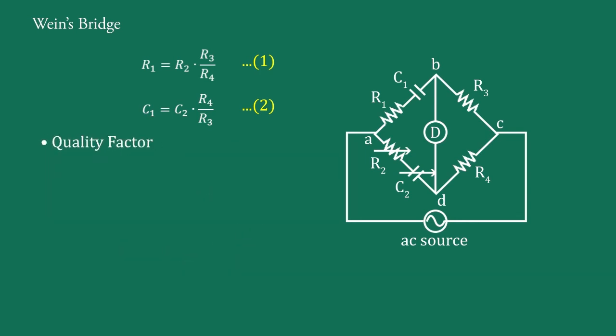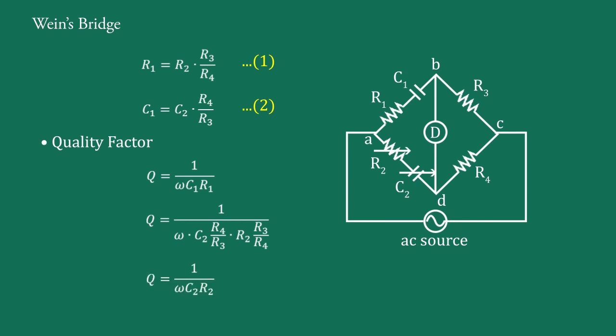Next, quality factor. For the R1-C1 series connection, quality factor is defined as Q = 1/(ωC1·R1). Putting the values of R1 and C1 from Equations 1 and 2, we get Q = 1/(ω·(C2·R4/R3)·(R2·R3/R4)). By simplification, we obtain Q = 1/(ωC2·R2). Here, Q is proportional to 1/C2, meaning a high quality factor is obtained with low capacitance.